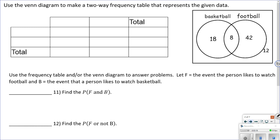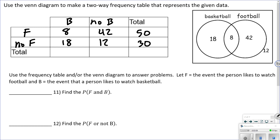Given an event diagram, we need to fill out a two-way frequency table. For football and basketball: football and basketball = 8; basketball but no football = 18; football but no basketball = 42; neither = 12. Adding those up: football total = 50, no football = 30, basketball total = 26, no basketball = 54, and they all add to 80. That's our two-way frequency table.